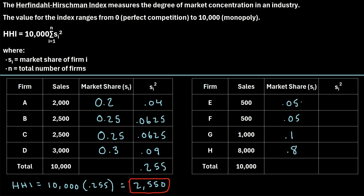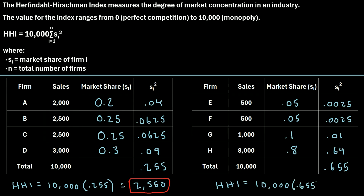The next step is to square all of these values. Taking the sum of all the squared values, we get 0.655. The very last step is 10,000 times 0.655, which comes out to 6,550. We can see that the HHI for this industry is much greater than the first industry, which is what we expected since one firm has way more sales than all the others — this industry skews much more towards the monopoly side. Those were two quick examples of how to calculate and interpret the Herfindahl-Hirschman Index.